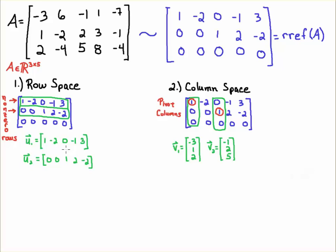Notice that the matrix A is a 3 by 5 matrix with real entries, so we denote that by saying A is an element of the vector space of 3 by 5 matrices with real entries — R^{3×5}. And it's a 5-dimensional vector for the row space, for each of the basis elements here.